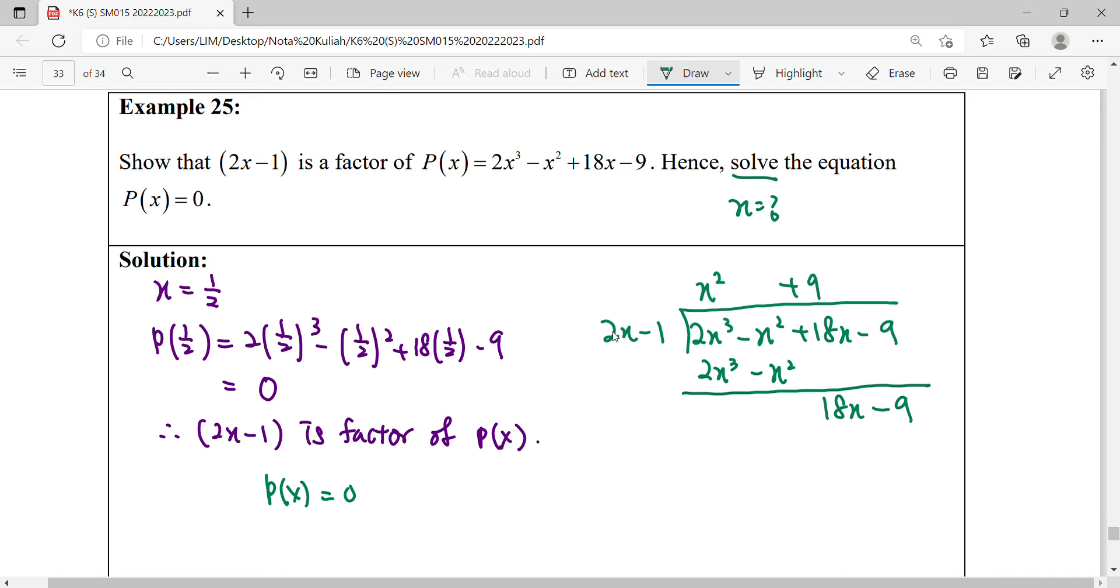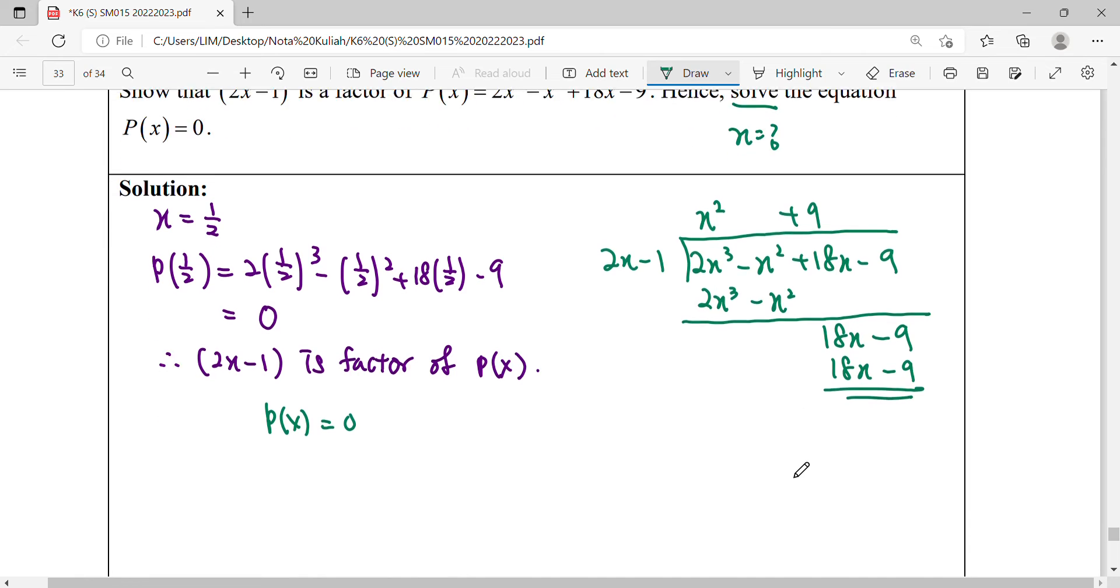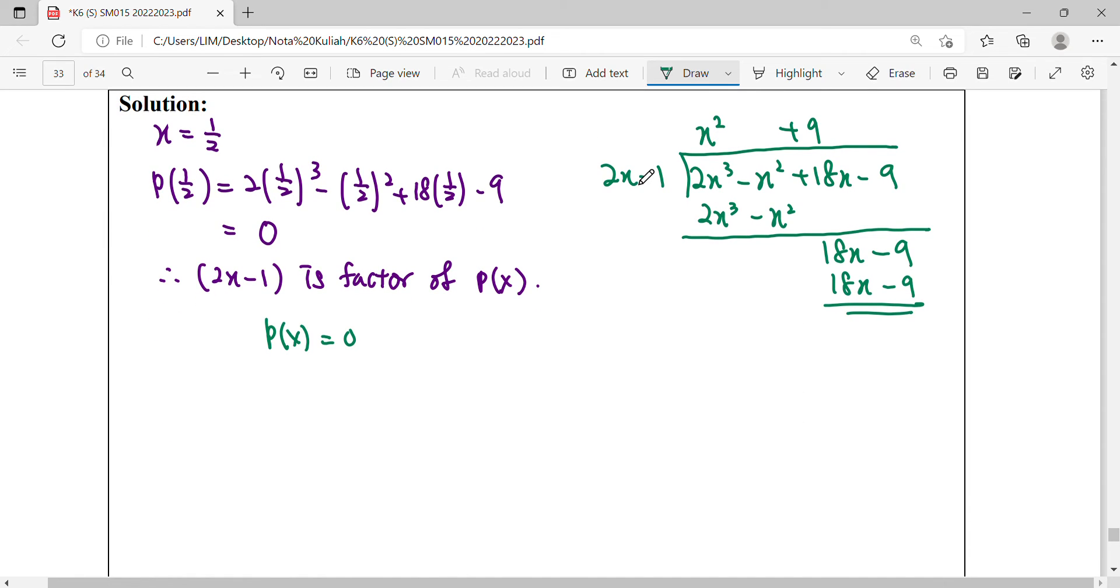You need 9. Multiply it. There's no more remainder because this is our factor, so the remainder will be 0.